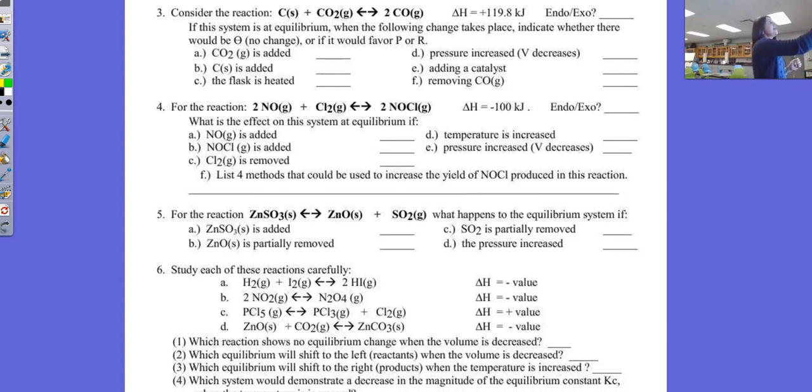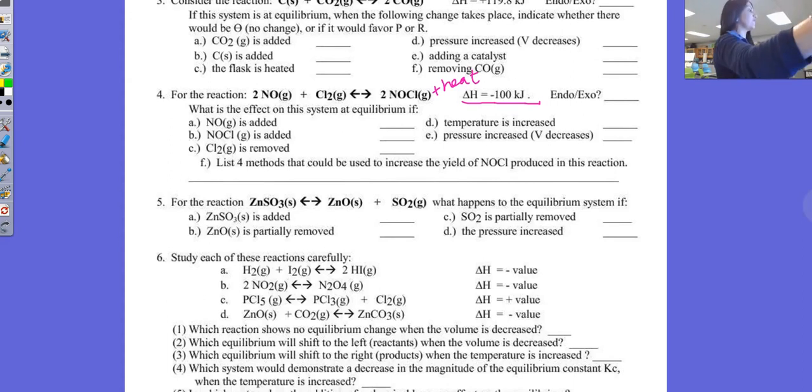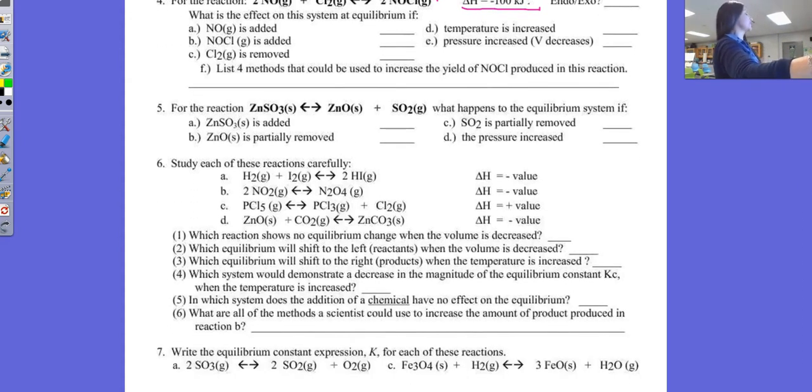The other thing to keep in mind is if you see something like this where you've got a sign for delta H, negative means exothermic, and so you really do want to go right in and say plus heat. That way you can treat heat, increase in temperature, for example, as if you were increasing one of your products to figure out which direction it's going to shift.